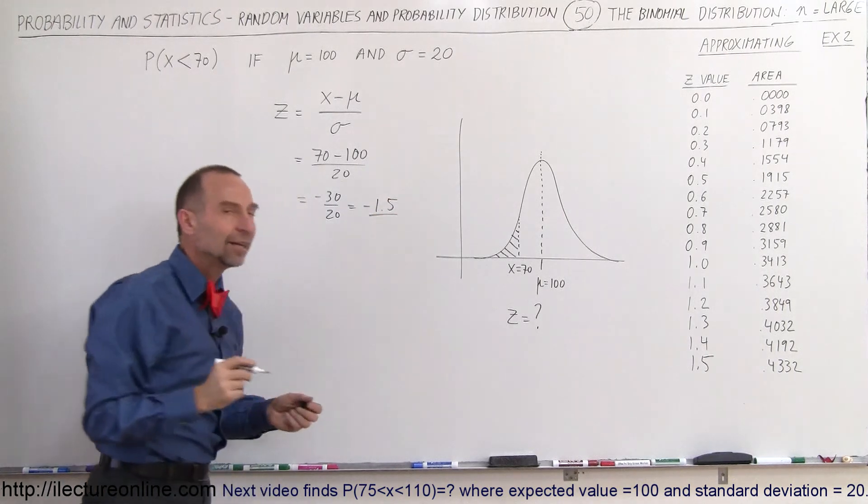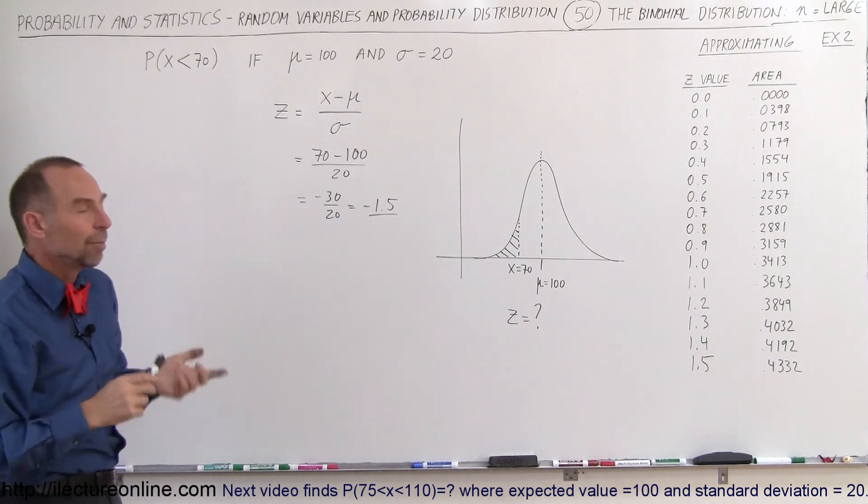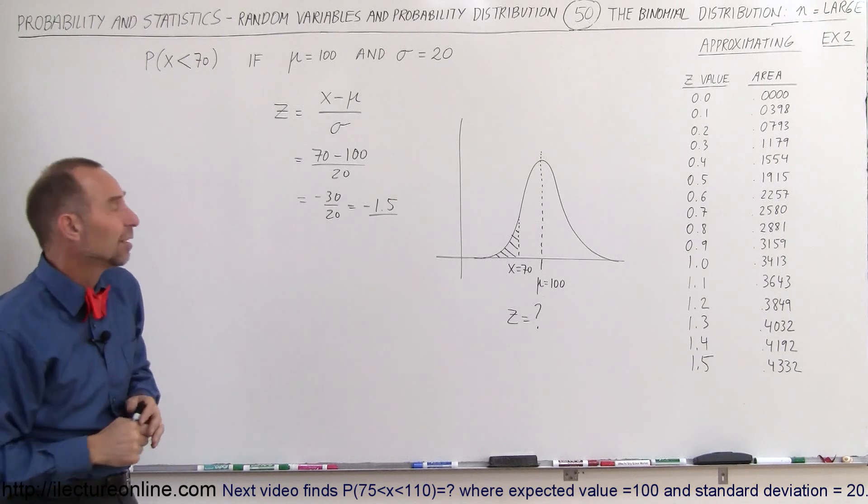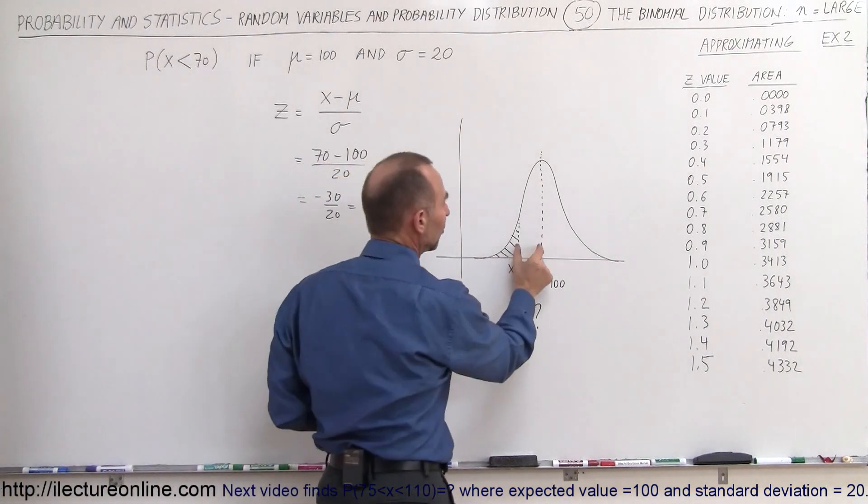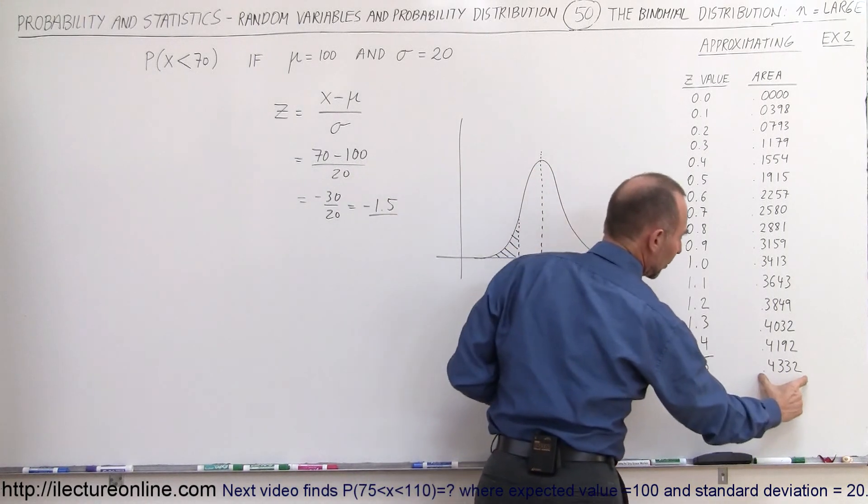I do see the negative there, but that's okay because the negative or positive value when we want to find the area, it really doesn't make any difference. So when the z value is minus 1.5, this area right here would be the same as this area right here when z is equal to plus 1.5.